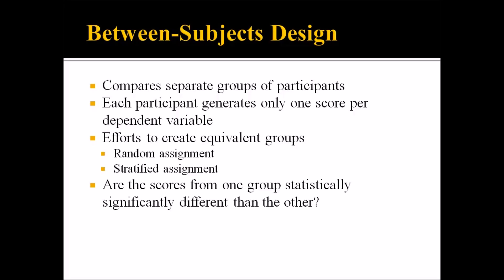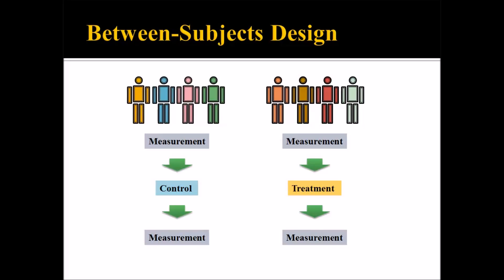Let's take a look at what a between-subjects design might look like graphically. We have a group of participants on the left and a different group of participants on the right. These are separate groups with different participants in each group — there's no overlap. Let's say we want to test a teaching method to see if it's more effective than the one currently used. Each group has a measurement using some sort of standardized test, and the control group receives the treatment as usual — in this case, the teaching that's normally delivered.